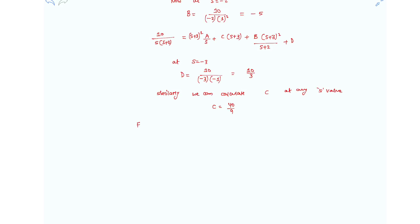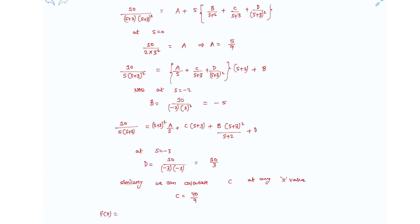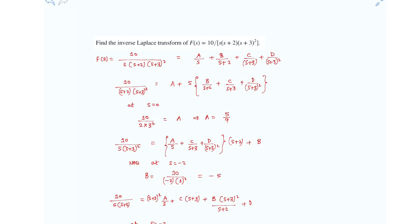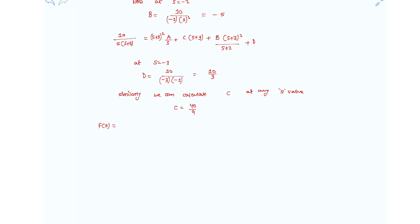Our partial fraction expression is: f(s) = (5/9)·(1/s) + (−5)·(1/(s+2)) + (40/9)·(1/(s+3)) + (10/3)·(1/(s+3)²).